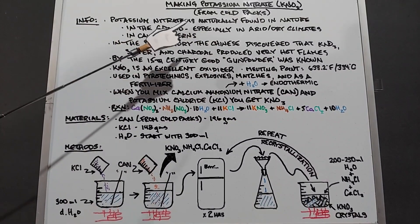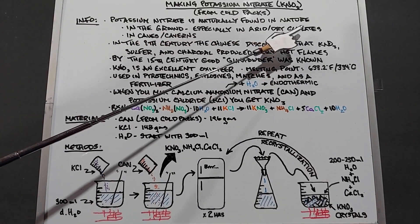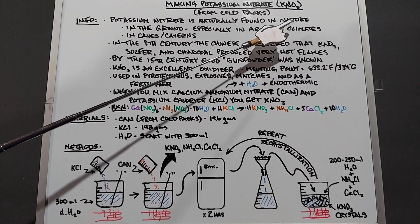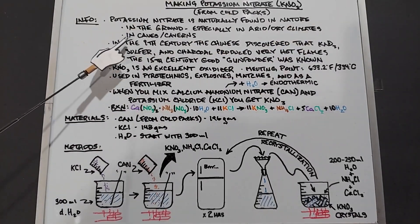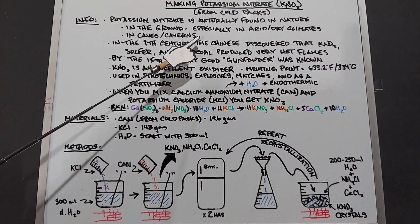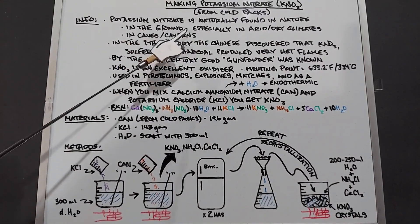Some quick info: potassium nitrate is naturally found in nature. It's found in the ground, especially in arid or dry climates, and it's found in caves and caverns. This is likely due to the ground dripping it through into these areas.